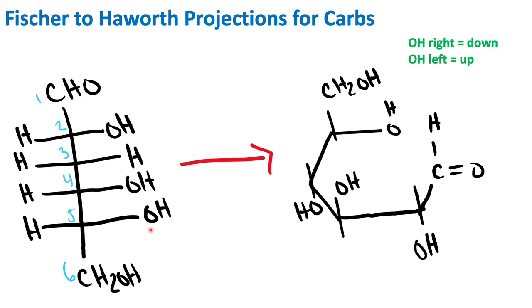Now, the second thing we have to know and understand is that in our Fischer projection, if our OH group is pointing to the right in the Fischer projection, in the Haworth projection that OH will point down. So if OH is pointing right in Fischer, in Haworth it will point down. Therefore, if our OH is pointing left in the Fischer projection, it'll point up in our Haworth projection.